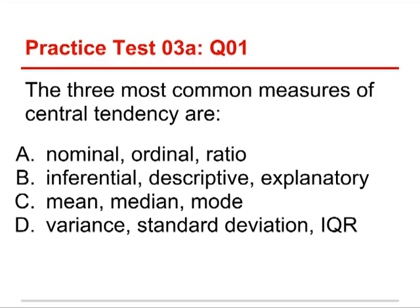The answer to this one is C. The mean, the median, and the mode are the three most common measures of central tendency. They are by no means the only ones — there's a very long list — but these are the most common.